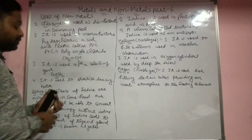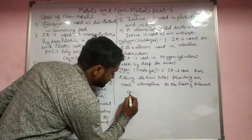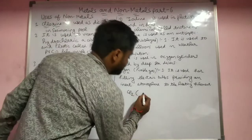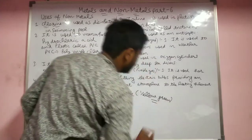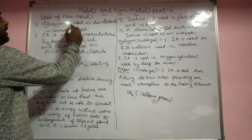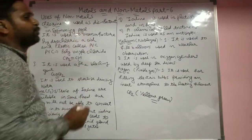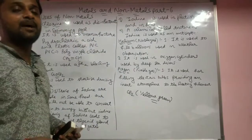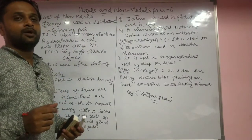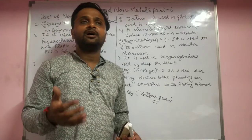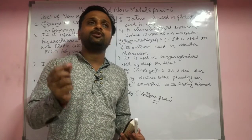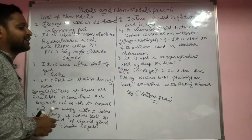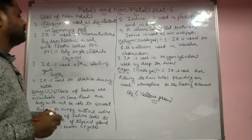First of all we see the uses of chlorine gas. Chlorine gas is yellow-green in color. Chlorine gas is used as a disinfectant in swimming pools — it is used to kill bacteria and microorganisms in the water. We use potash alum to remove mud from water, but if we want to kill bacteria we use chlorine gas as a disinfectant to clean the water.